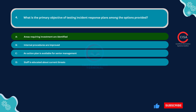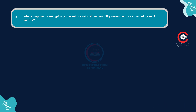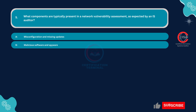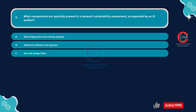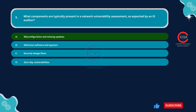Question number five: What components are typically present in a network vulnerability assessment as expected by an IS auditor? Option A: Misconfiguration and missing updates. Option B: Malicious software and spyware. Option C: Security design flaws. Option D: Zero-day vulnerabilities. The correct answer is Option A — misconfiguration and missing updates.